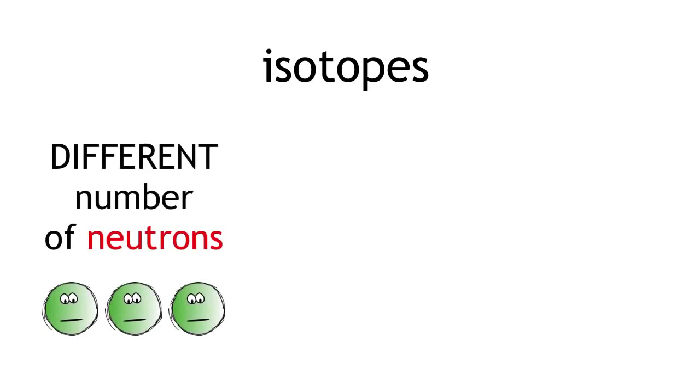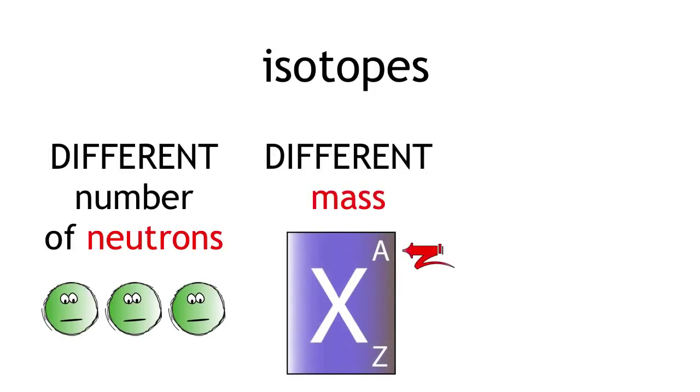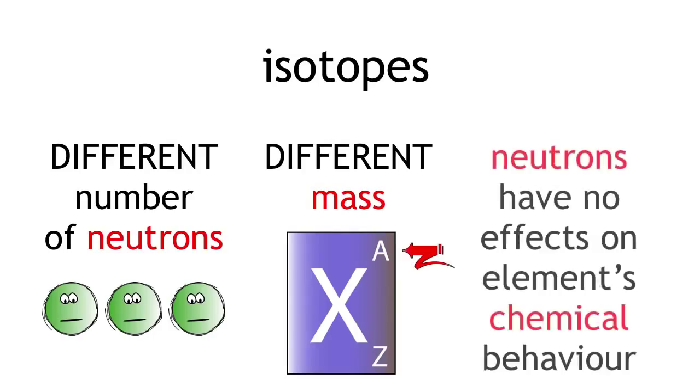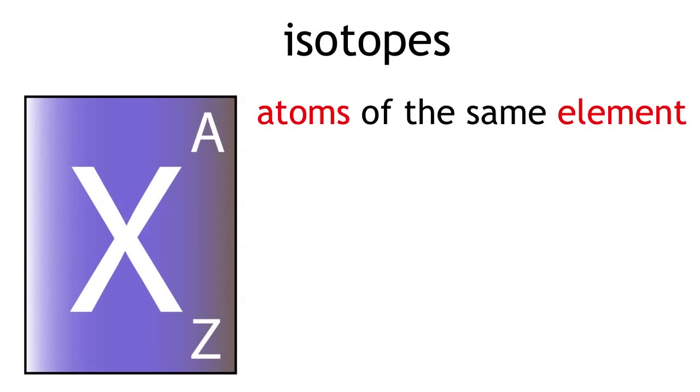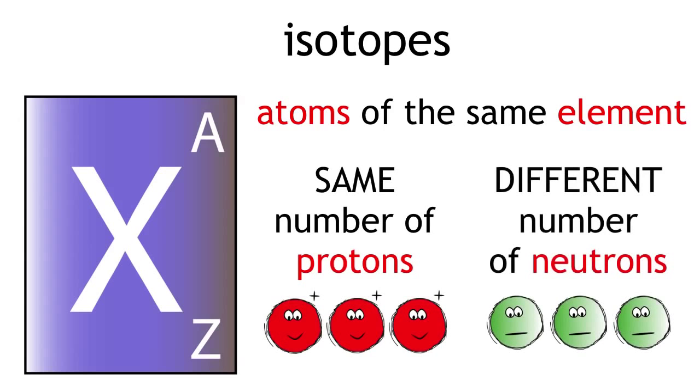Isotopes only differ in their number of neutrons and their mass. Their chemical properties are exactly the same because neutrons have no effect on an element's chemical behavior. This is controlled by electrons which we will discuss in another video. So isotopes are atoms of the same element with the same number of protons but a different number of neutrons. They have different masses but their chemical properties are exactly the same.